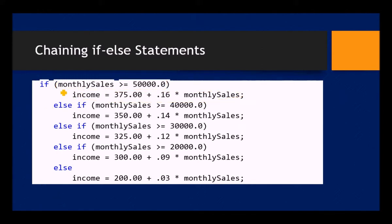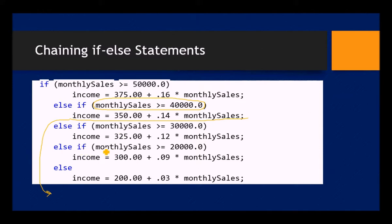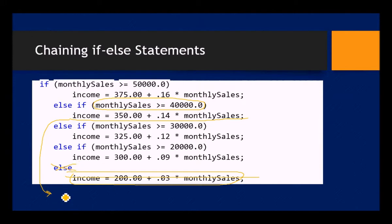The if-else chain keeps going until it finds a true condition or reaches the optional else at the end. If none of the if conditions are true and there's an else, that statement runs and the chain exits. If there's no else and nothing is true, it just falls through without doing anything. Only one branch ever executes — as soon as the first true condition is found, it runs that statement and exits the entire chain.